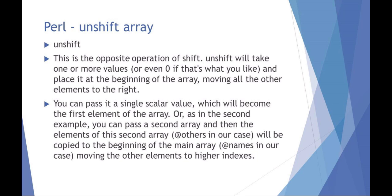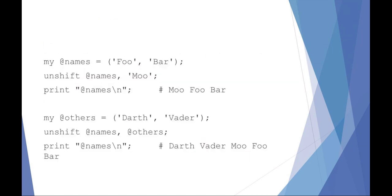Unshift is the opposite of shift — it moves everything to the right. If you give it a value, that new value is inserted all the way on the left. In this example, I've got an array of names foo and bar. I unshift, scooting everything to the right, and insert the name moo in front, so my new array becomes moo, foo, bar. You can also use a second array to unshift into the array. So that's pop, push, shift, and unshift.